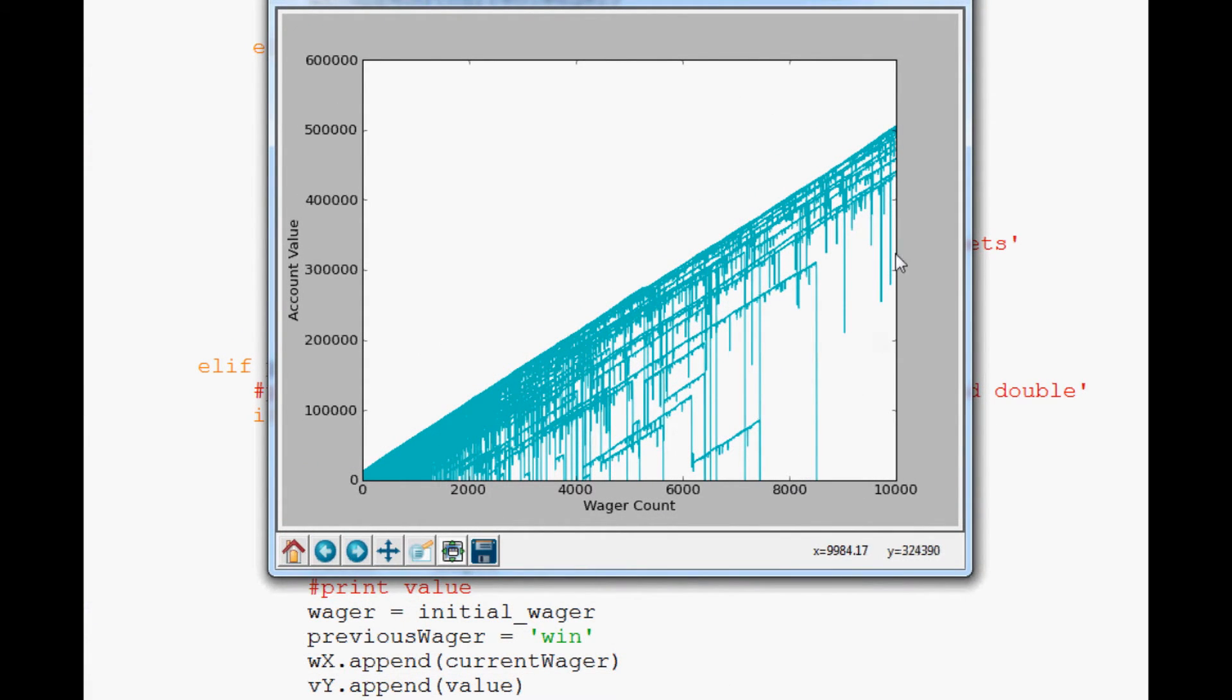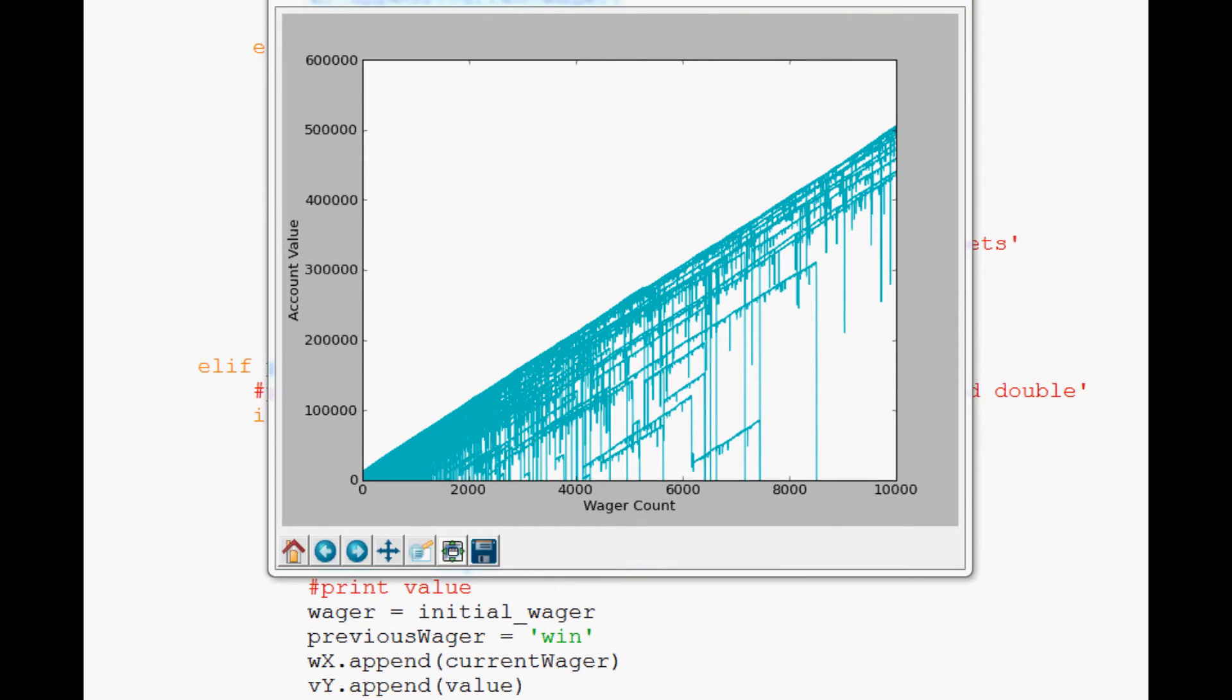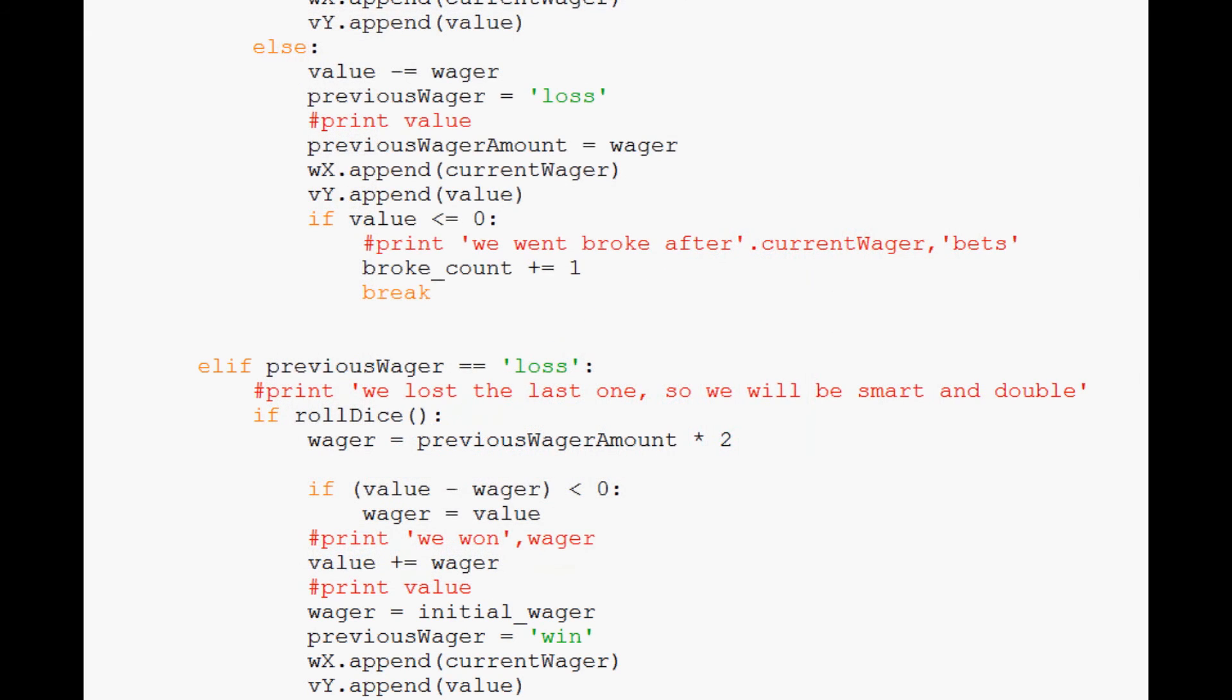Okay, so now we can a little better see the people that go and end up going to zero. Yes, that looks a lot better. So we can see how many people actually go broke. Because before we weren't actually being able to visualize the amount of people that actually went broke.